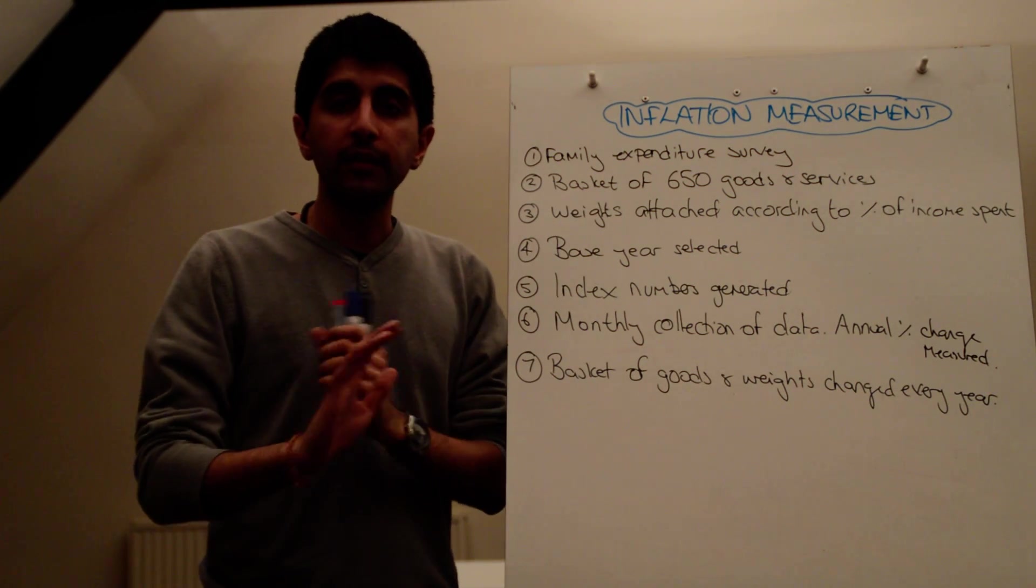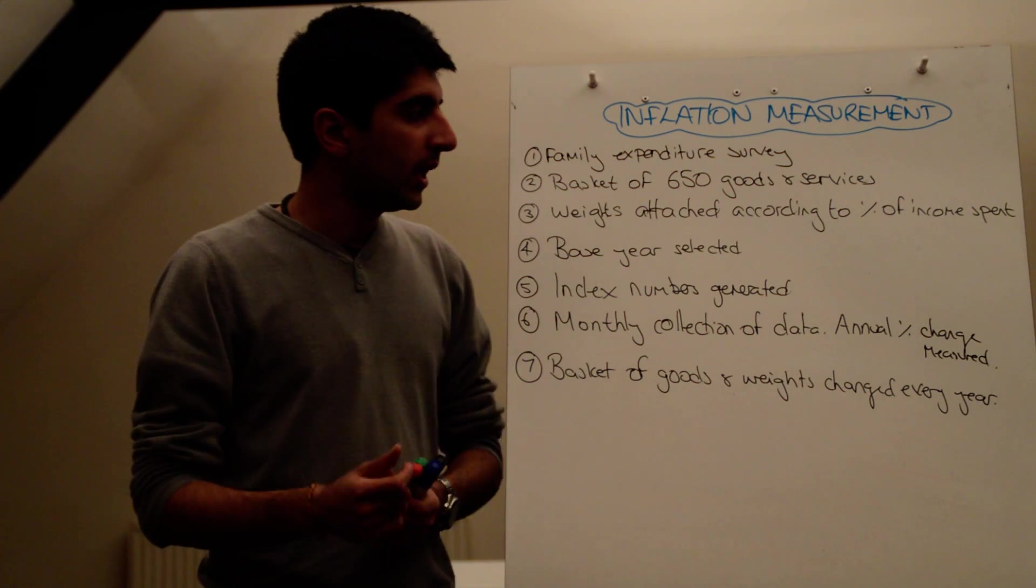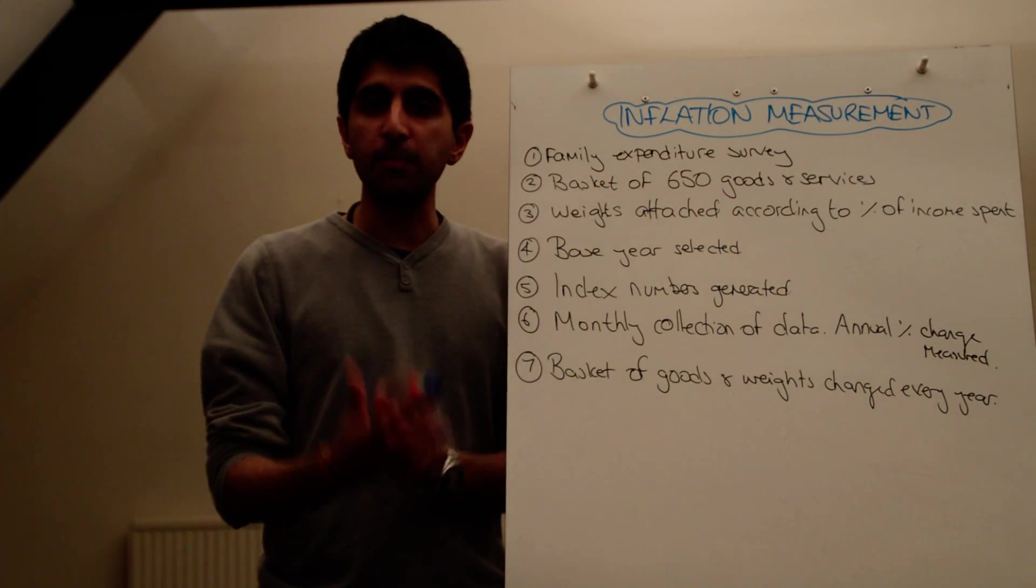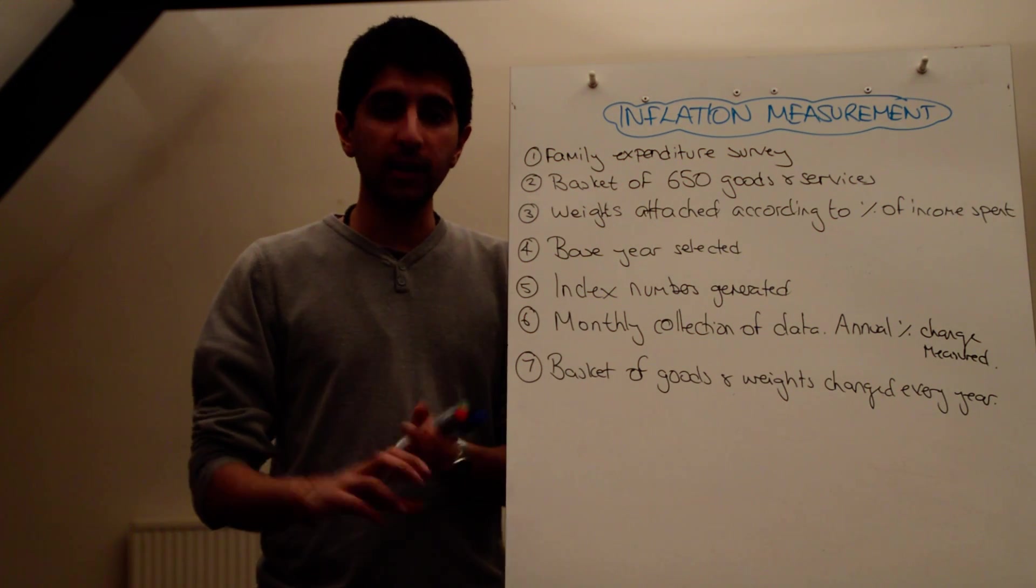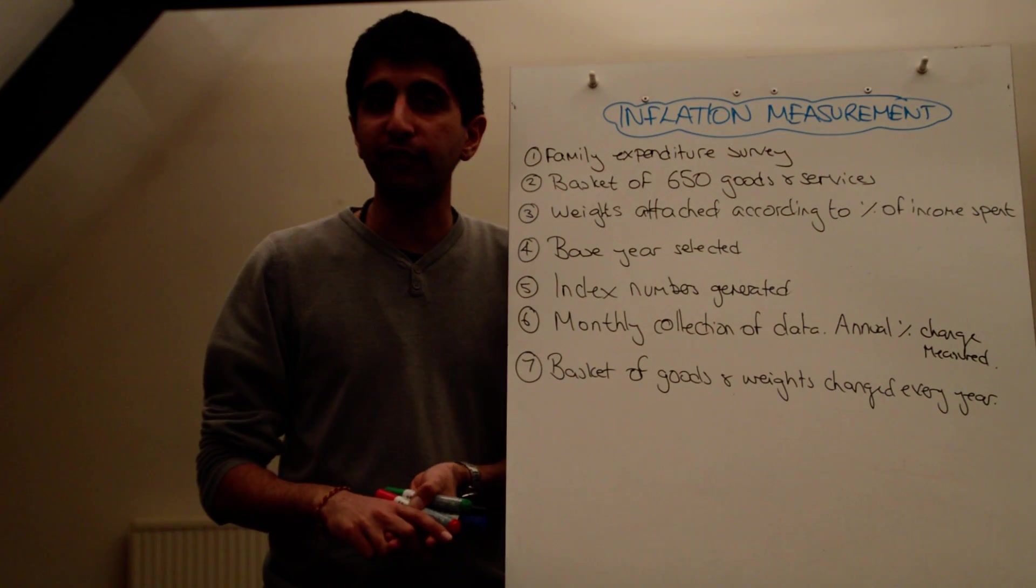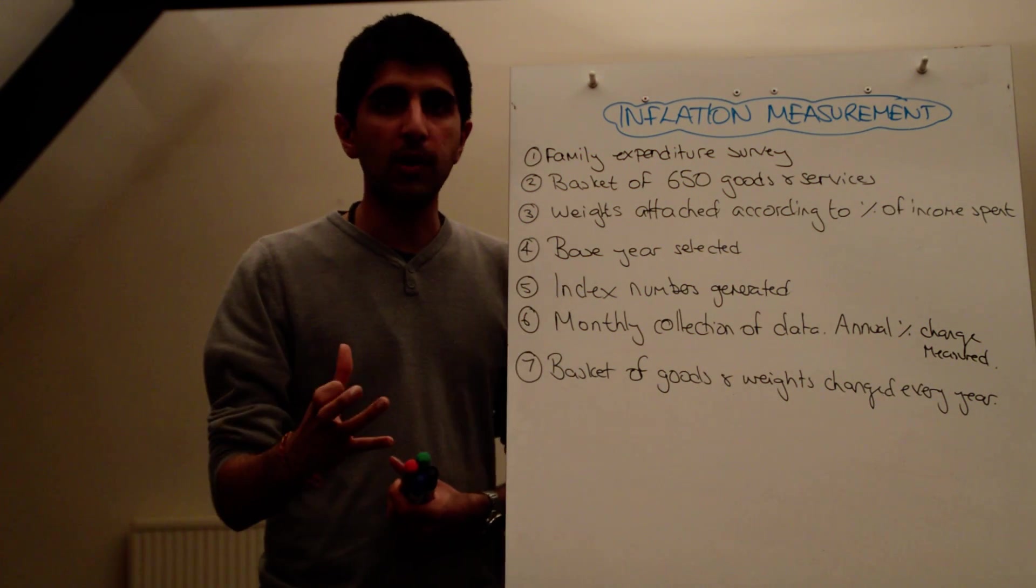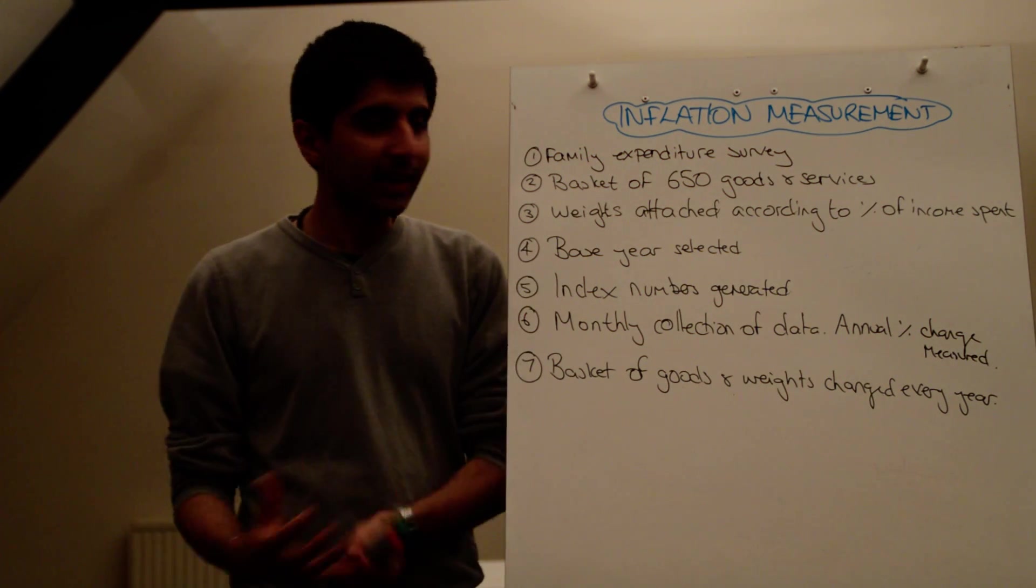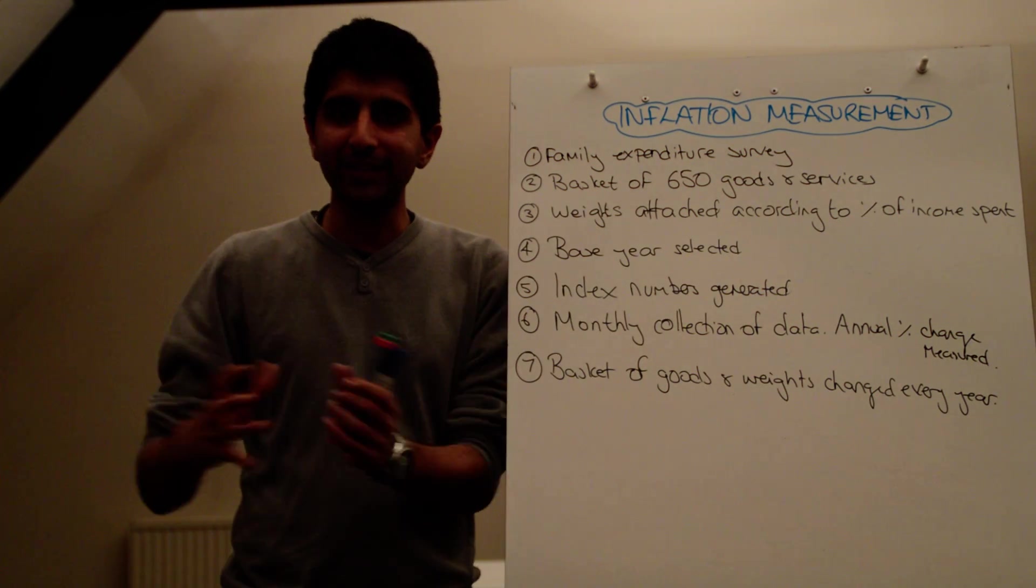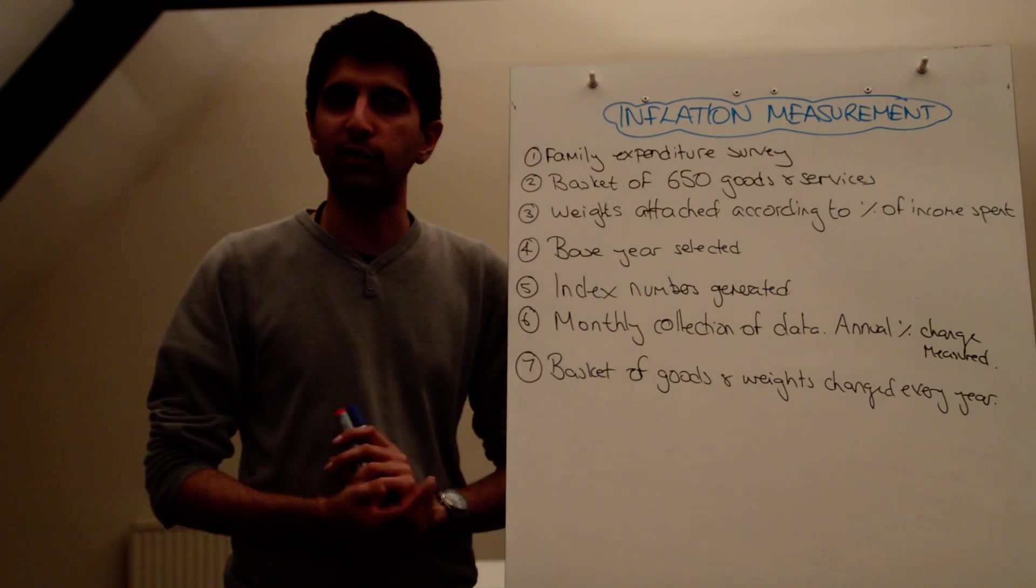And what these households, what these citizens and consumers need to do is they have to track, over a two-week period, what they're actually spending on, how much they're spending, what goods and services they're actually buying, and where they're buying from. All that data is then collected, and the most popular 650 goods and services are then collected and put into an imaginary basket.